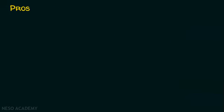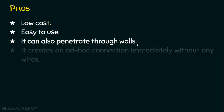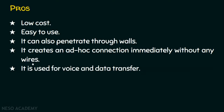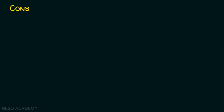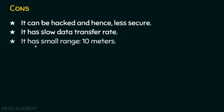Now let's see the pros and cons of Bluetooth. The pros are: it's low cost and easy to use; it can penetrate through walls even though it is short-range communication; it creates an ad hoc connection immediately without any wires since Bluetooth is a wireless technology; and it is used for both voice and data transfers — Bluetooth speakers and Bluetooth headsets, which are very popular today, are examples of voice transfers. The cons are: it can be hacked and is hence less secure; it has a slow data rate; and it has a small coverage range of up to 10 meters, though one class can reach up to 100 meters.